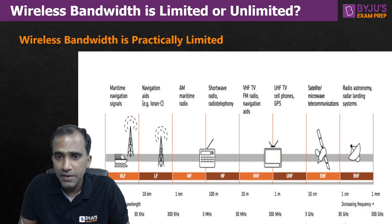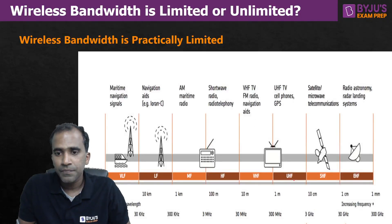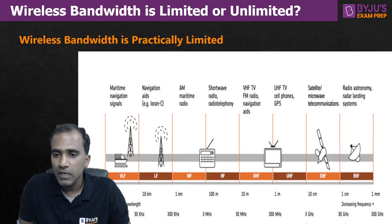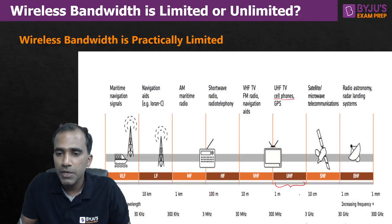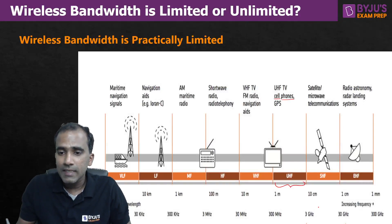Very high frequencies are used for FM radio and other communications. Ultra high frequencies — 300 MHz to 3 GHz — this is a very important range. In this range, we use our mobile phones; mobile phones communicate in this ultra high frequency range. GPS also operates in the same range. Then coming to 3 GHz to 30 GHz.